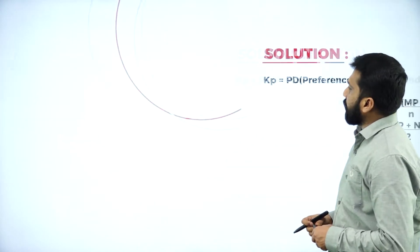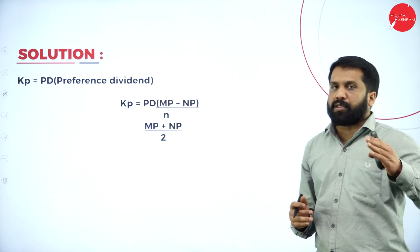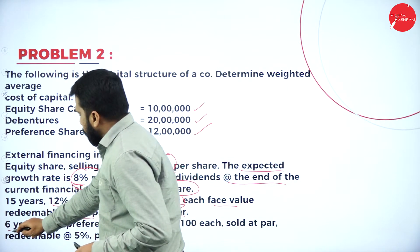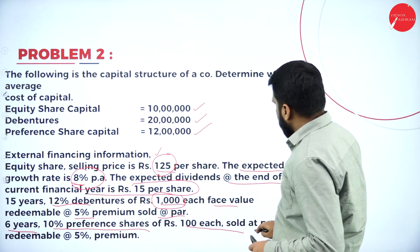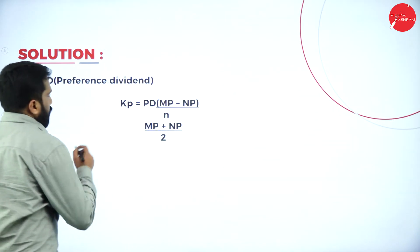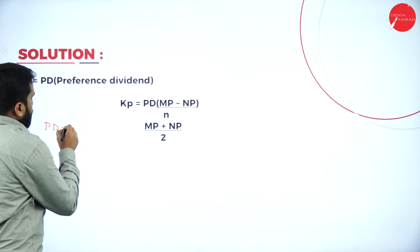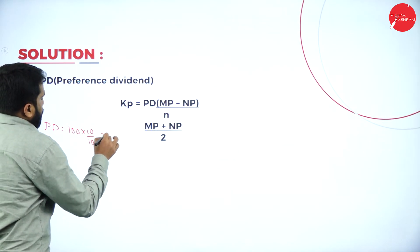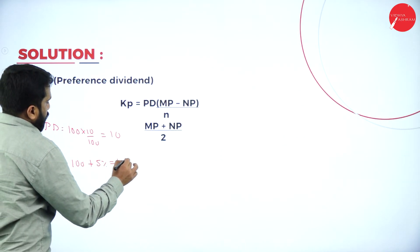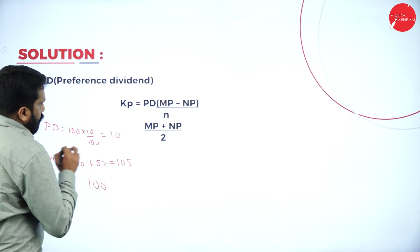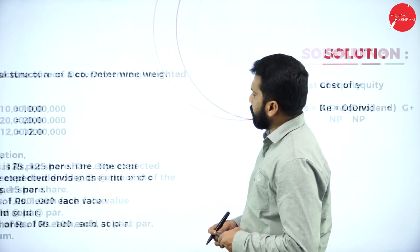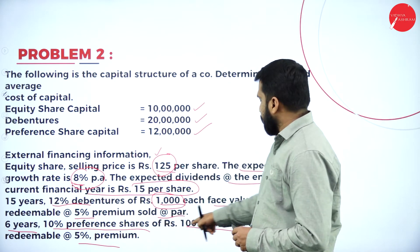Now we go for cost of preference shares. From the question: number of years is 6, 10% preference shares of rupees 100 each, sold at par, redeemable at 5% premium — similar structure. Dividend: 100 into 10% equals 10. Maturity price: 100 plus 5% equals 105. Net proceeds (par value): 100. Number of years: 6.